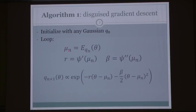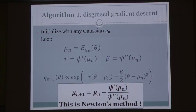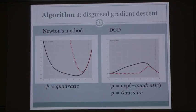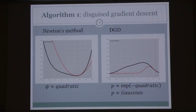The dynamics of this process are purely dictated by the dynamics of the mean, and the mean obeys an equation we recognize as Newton's method. So algorithm number one is just Newton's method disguised to work with Gaussian iterates instead of point approximations of the maximum. It has a nice intuitive interpretation: we compute a local quadratic approximation and keep going to the minimum of these quadratic approximations.